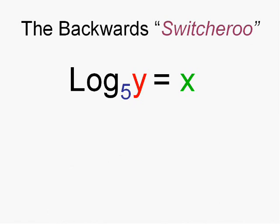Let's try a backwards switcheroo. We have the logarithm using base 5 to get the number y is x. Well, we know the base is 5. And remember the exponent is the logarithm, is the x. So we would rewrite this y equals 5 to the x. The number y is the base 5 to the exponent x.